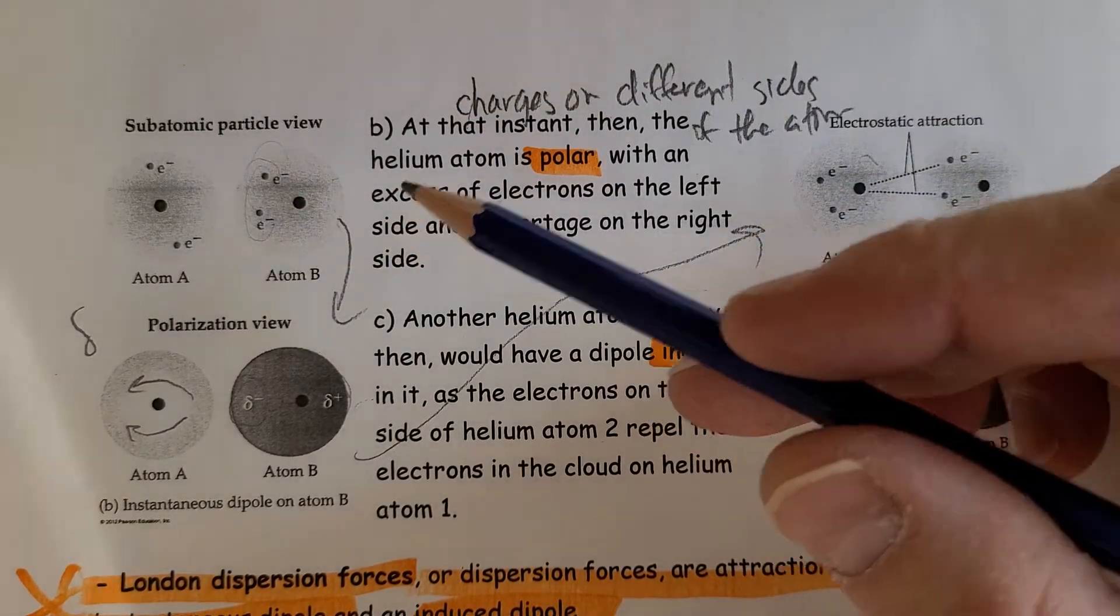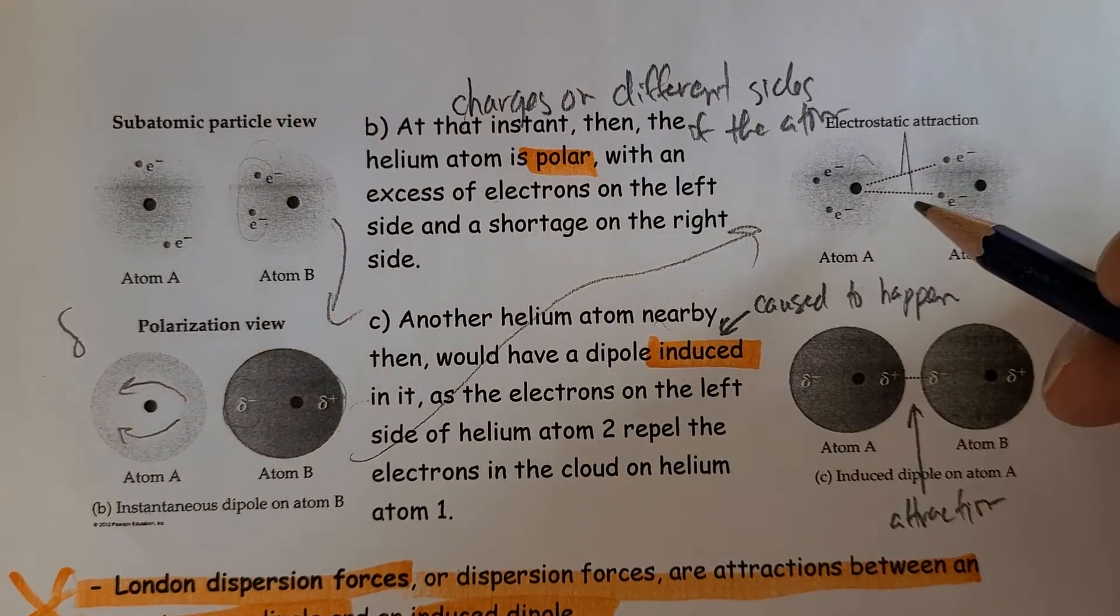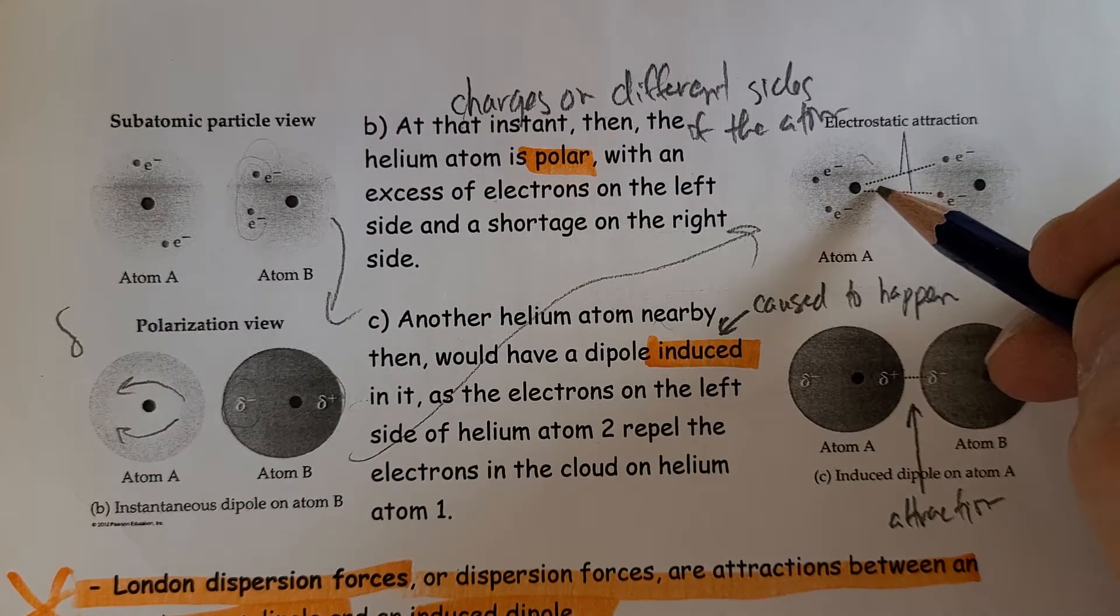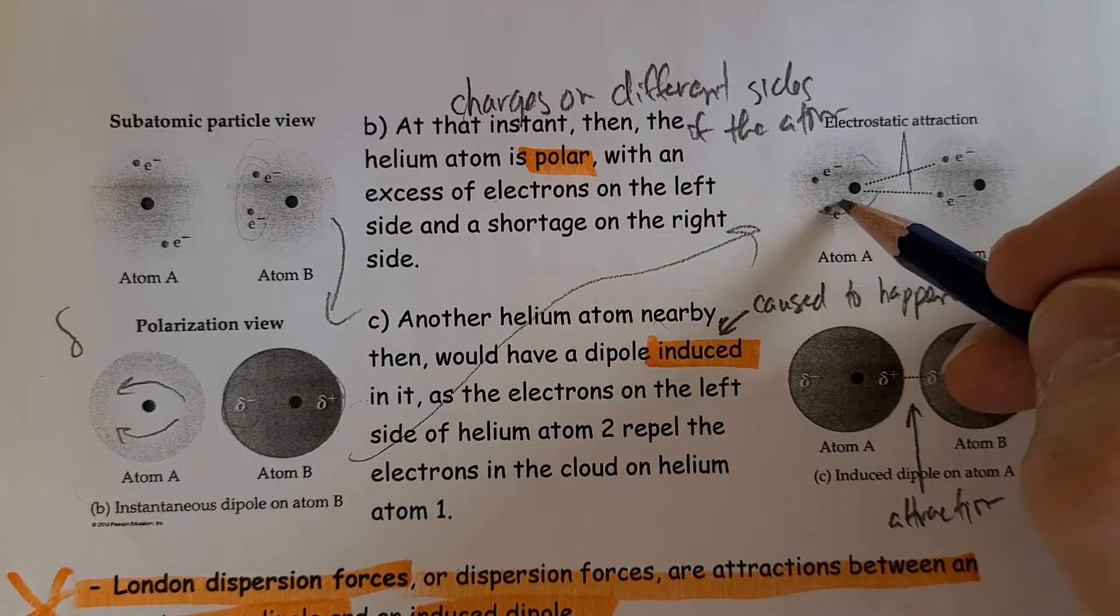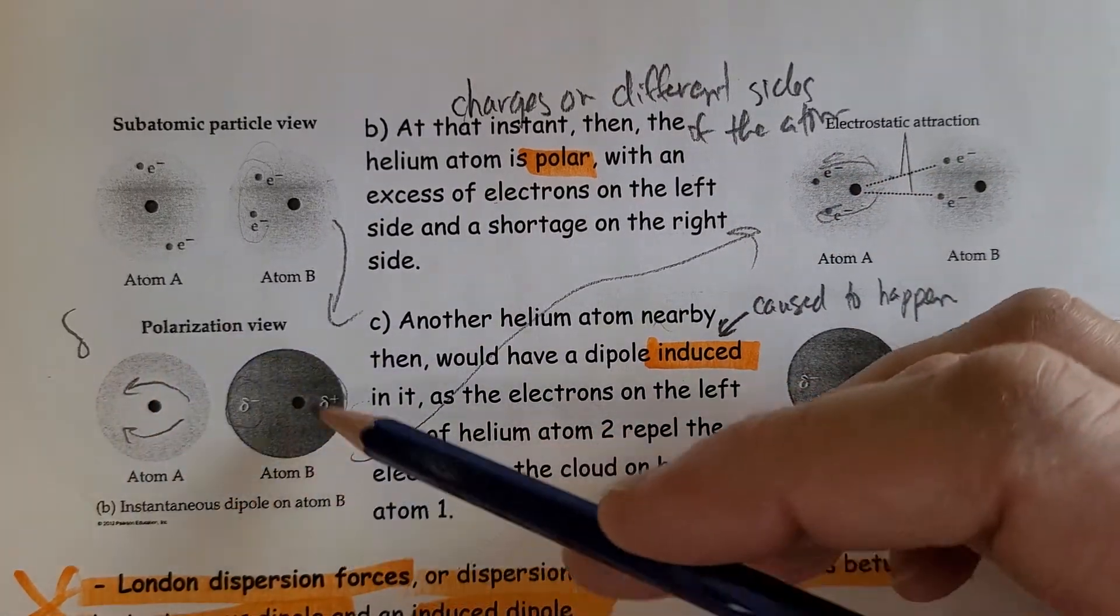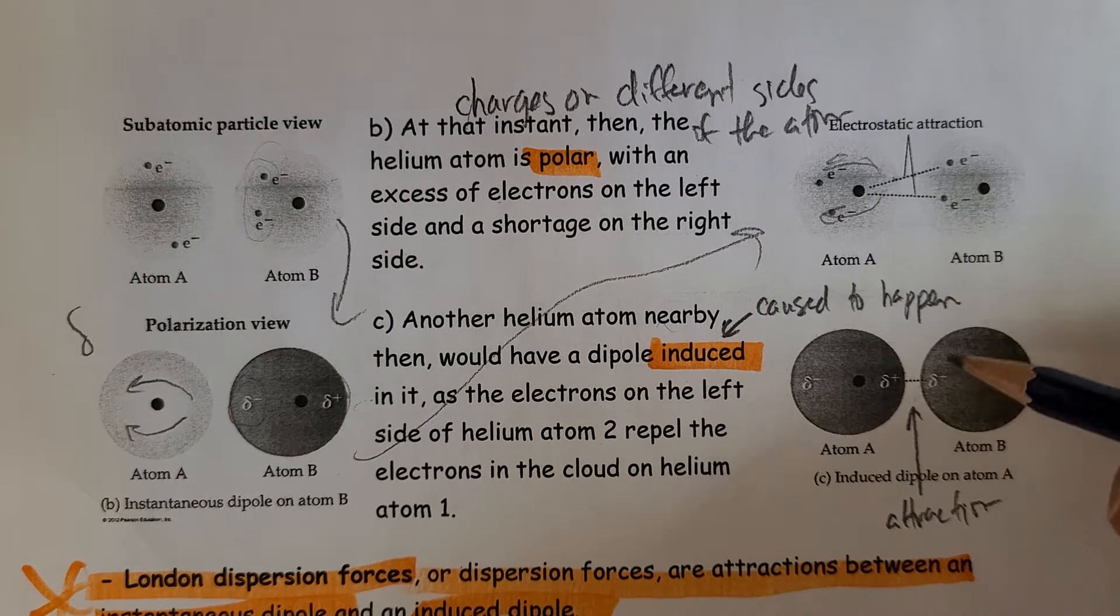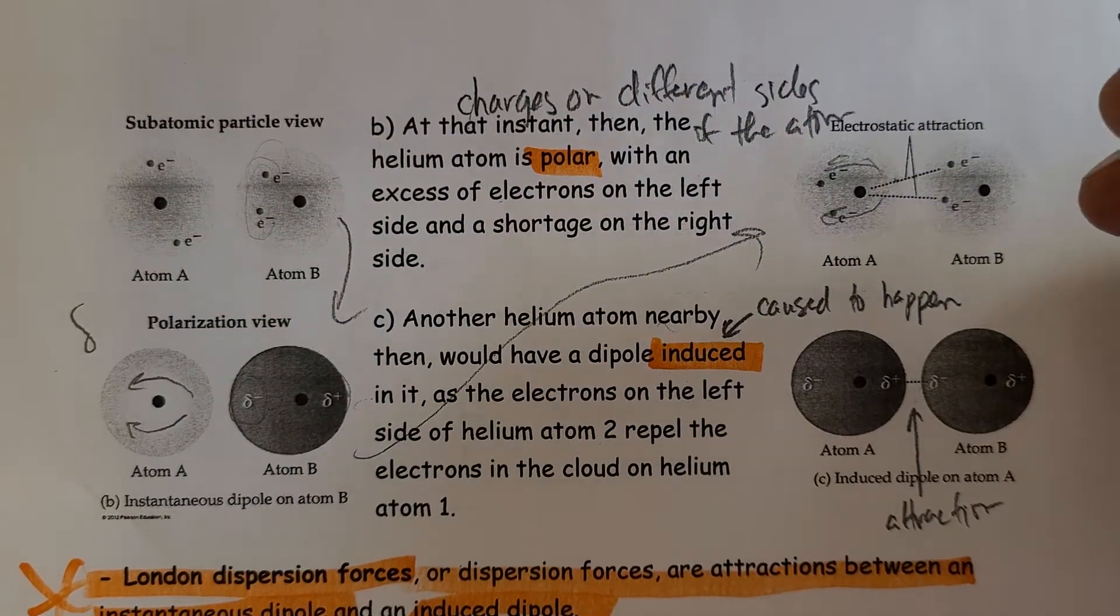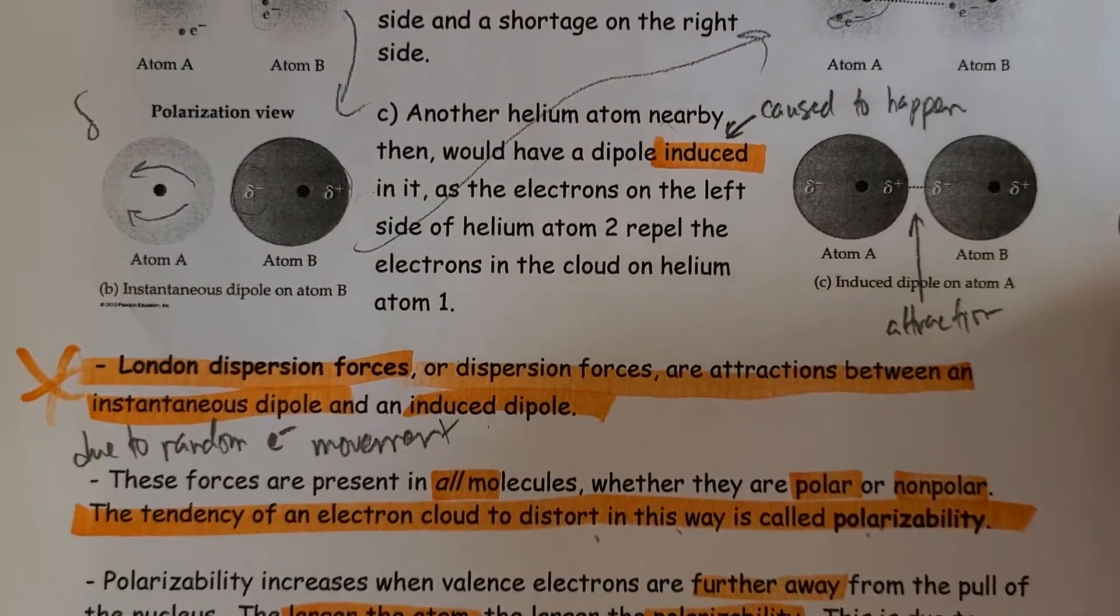And then if that comes close to a neutral molecule or atom, it forces the electrons here to be pushed over to this side, making this side negative, this side positive. So we'd get a slight attraction there, just due to random electron movement.